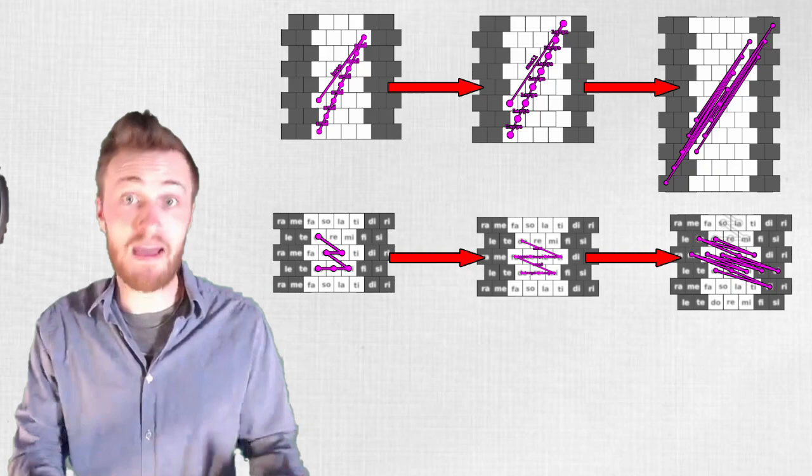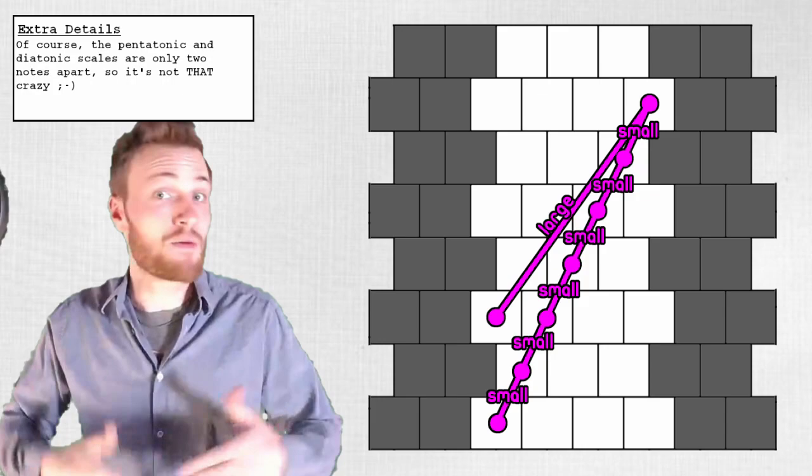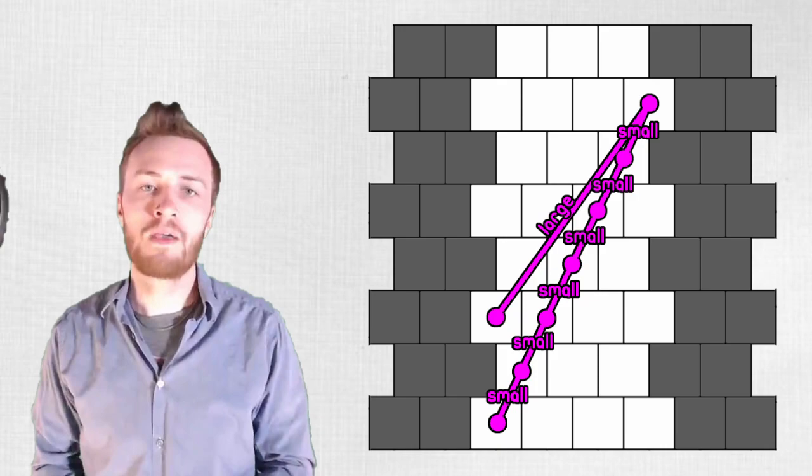These scales might be loosely analogous to our pentatonic, diatonic, and chromatic scales, though it's especially interesting that two of these scales are just one note apart. Perhaps alternating between the two, depending on the melodic needs of a given passage, would be commonplace in porcupine temperament.